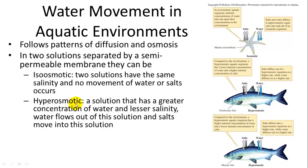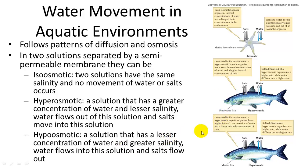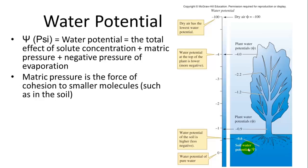Or you can be hyperosmotic. That's where the solution has a greater concentration of water and lesser salinity. So this fish is in a hyperosmotic environment. And water will flow out of the hyperosmotic solution and salts will move into that solution. So water will increase and salts will be lost, whereas if a fish is in a hypoosmotic solution, a solution that has a lesser concentration of water and a greater salinity, water will flow out of this organism and salts will flow in. Sorry, water flows in and salts will flow out.